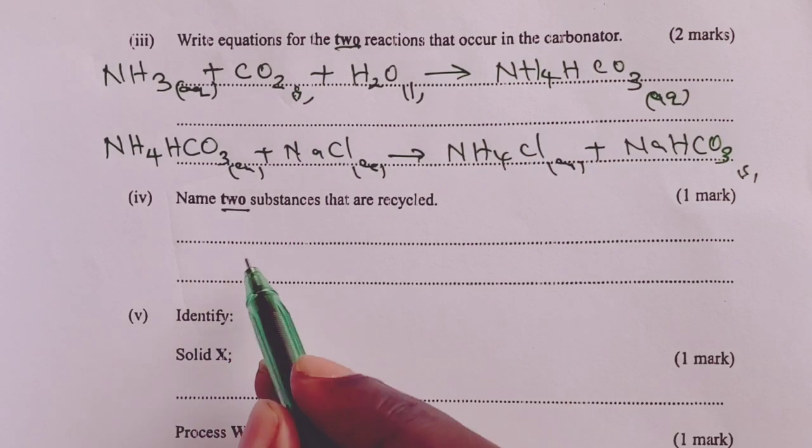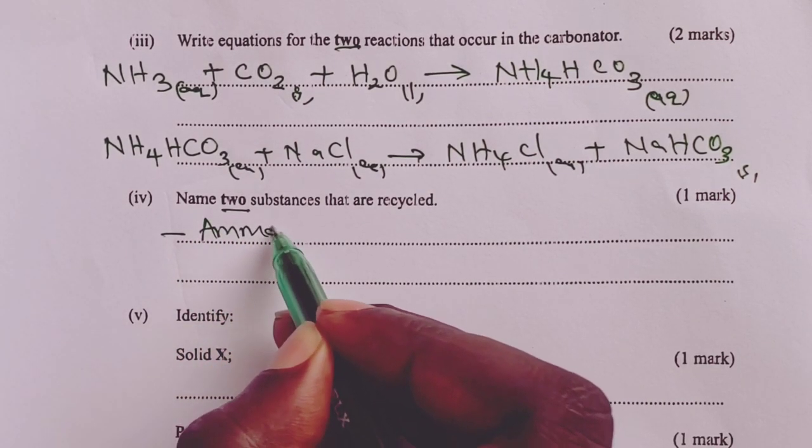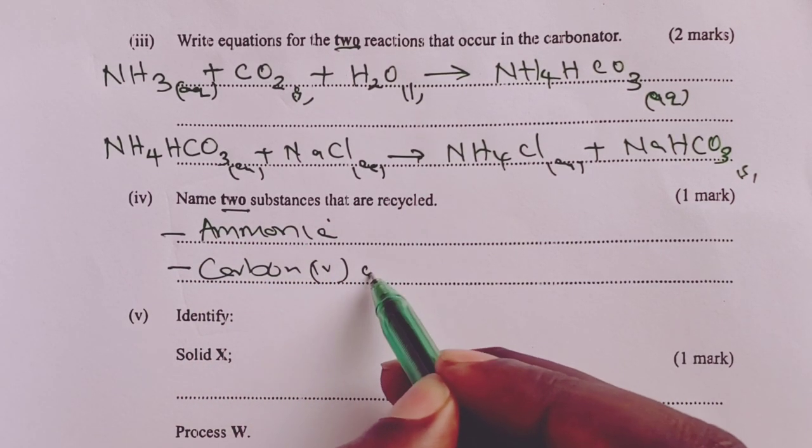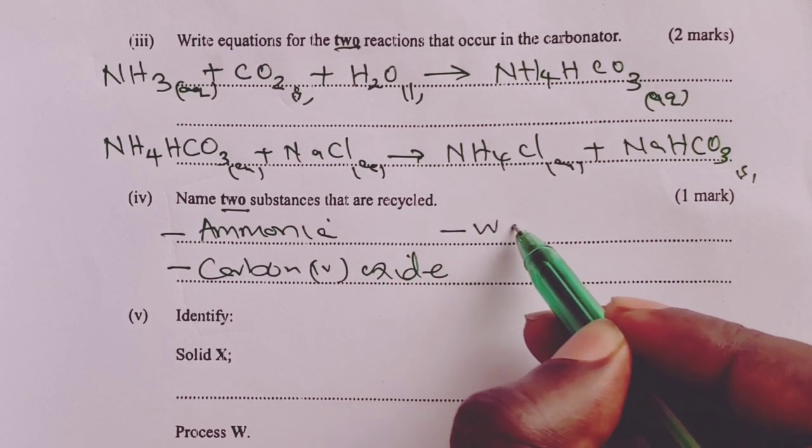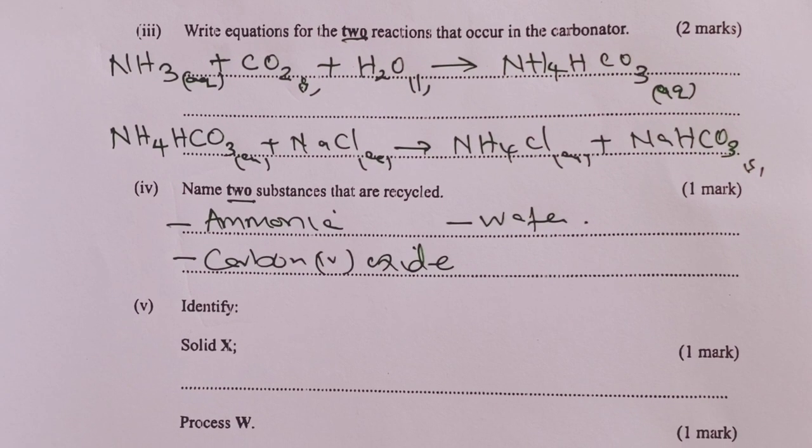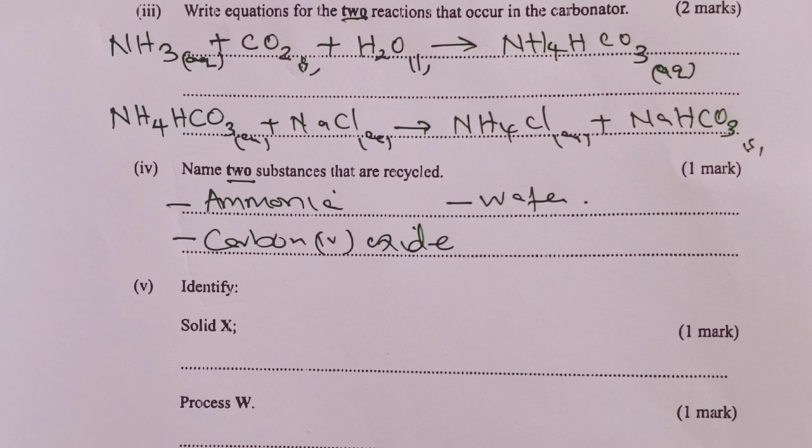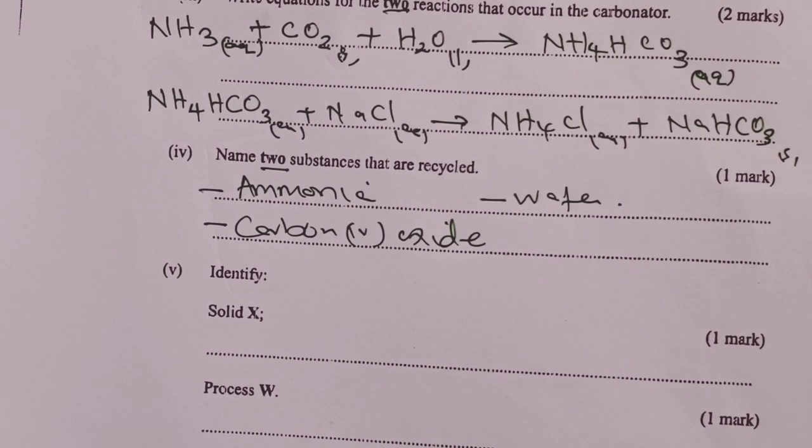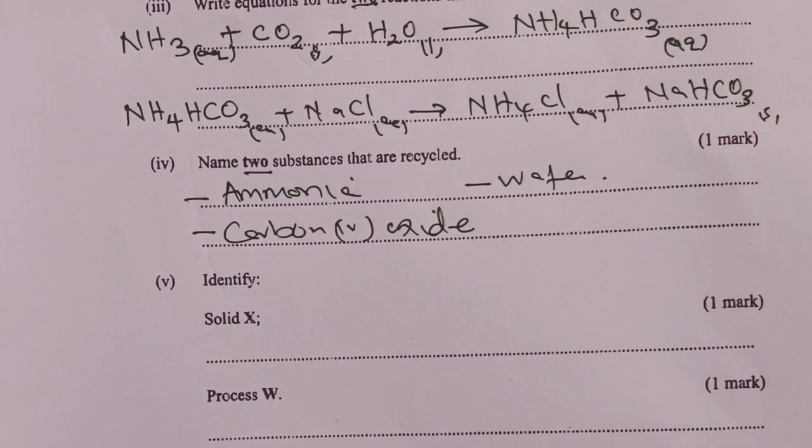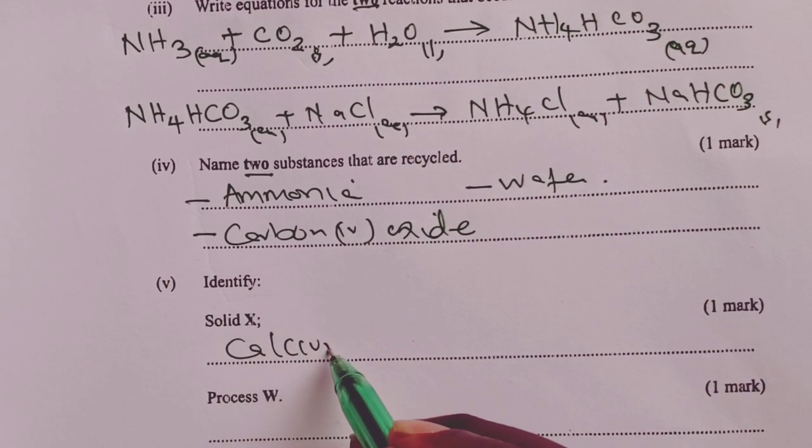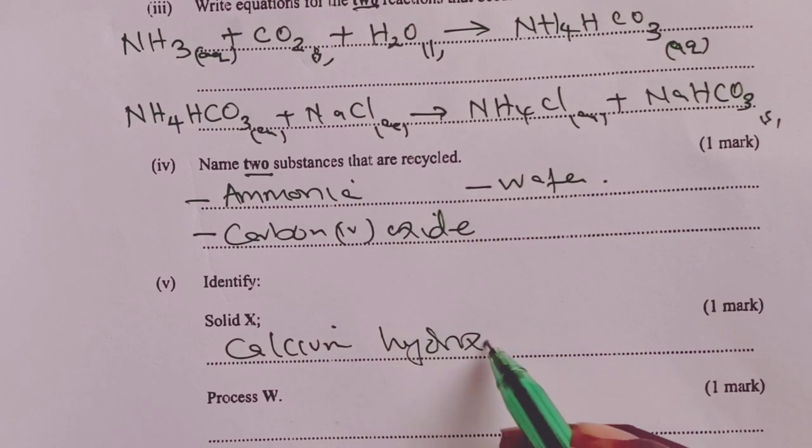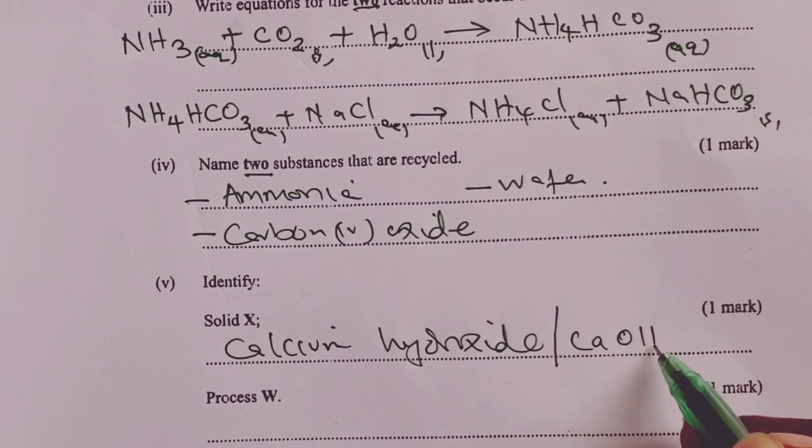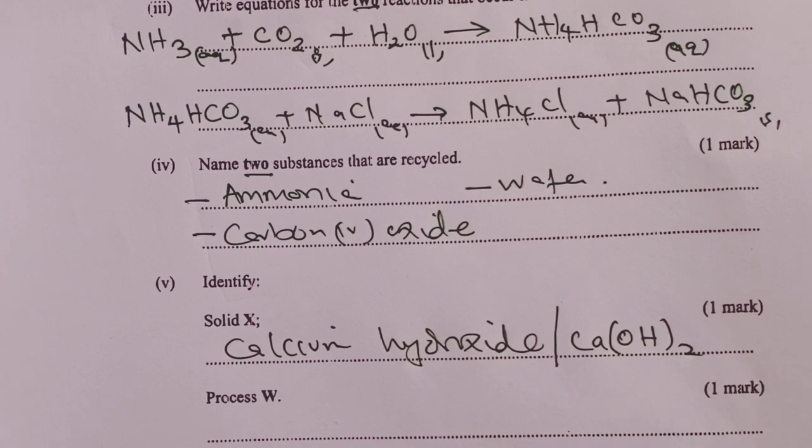Two substances that are recycled. Of course, we recycle ammonia. We also recycle carbon 4 oxide. But to a lesser extent we also recycled water. We were asked only two. Now, two solid X. If we followed the scheme very well, our solid X was calcium hydroxide. And of course we are told to identify, so we shall as well accept anybody who wrote the correct formula for the same.